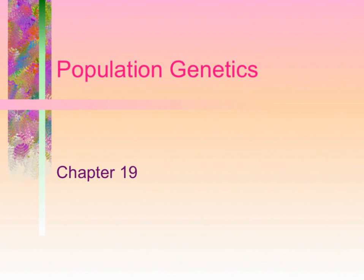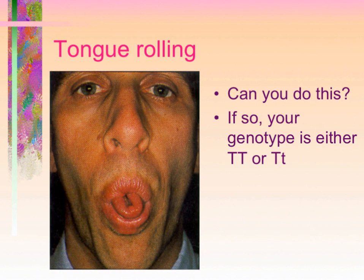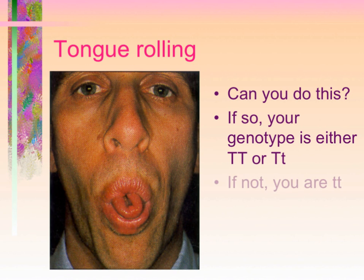Chapter nineteen: genetic diversity within populations. Can you roll your tongue? If you can, then you have the dominant characteristic or dominant trait, which means your genotype is going to be big T big T or big T little t. If you can't, then you're little t little t.